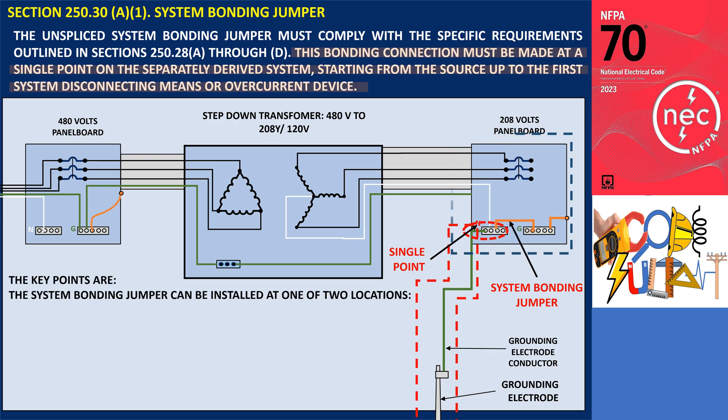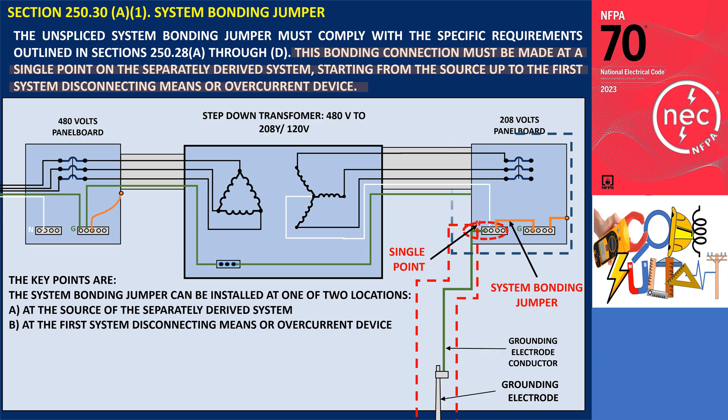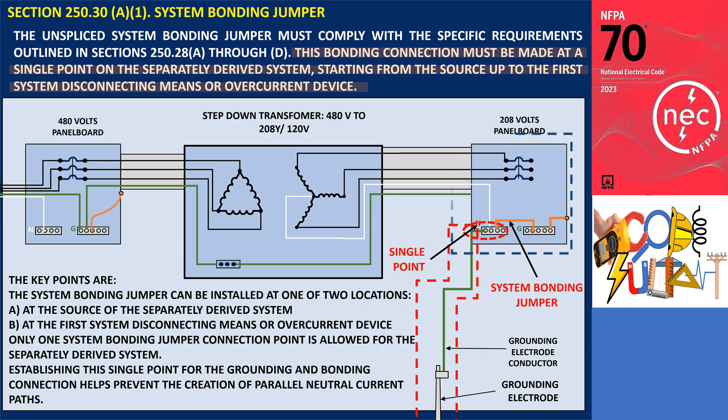Therefore, the system bonding jumper is required and permitted to be installed at only one location on the separately derived system, either at the source of the separately derived system, or at the first system disconnecting means or overcurrent device. This single point for the grounding and bonding connection is intended to reduce the likelihood of parallel paths for neutral current.